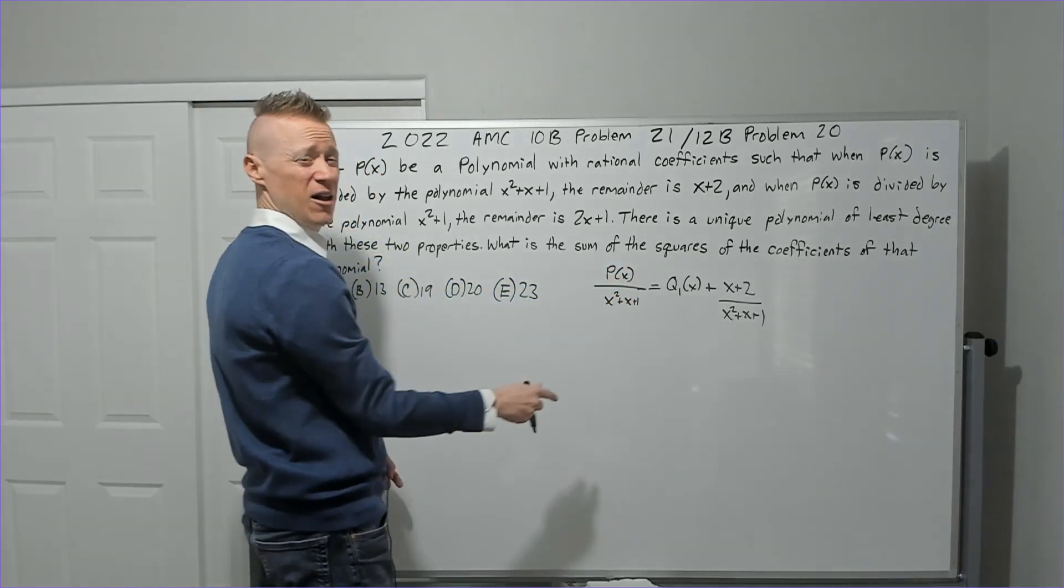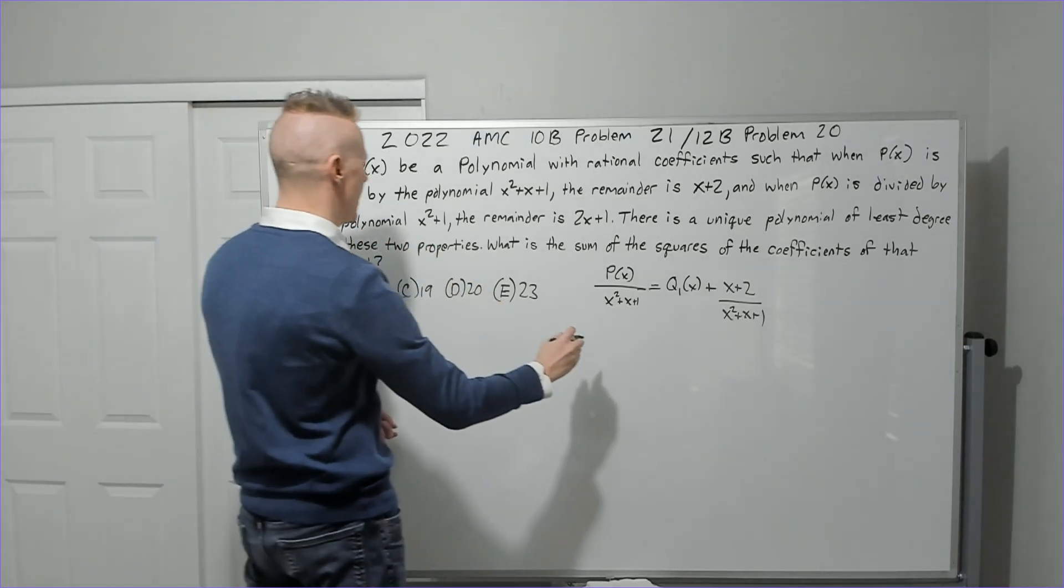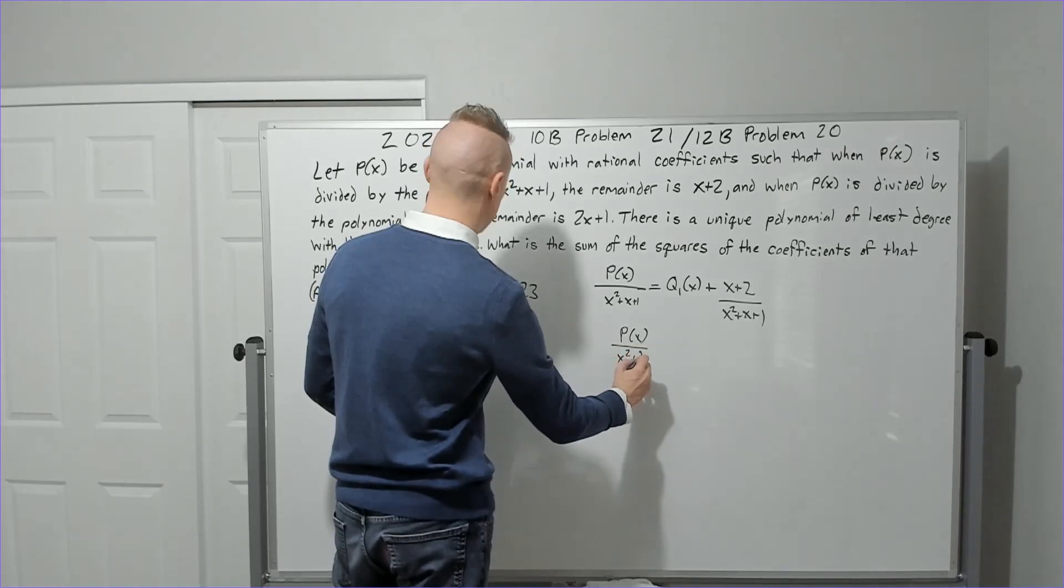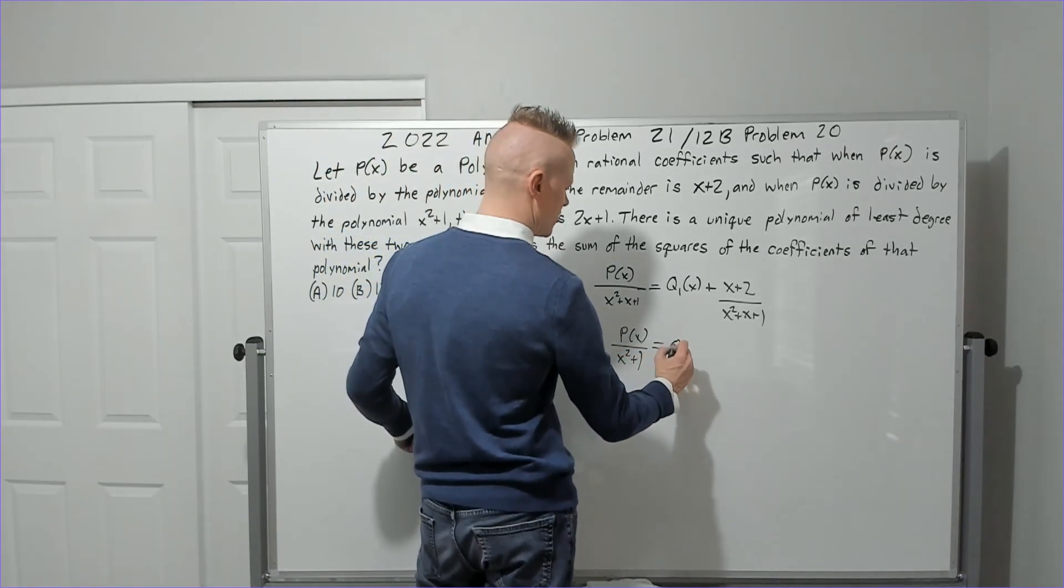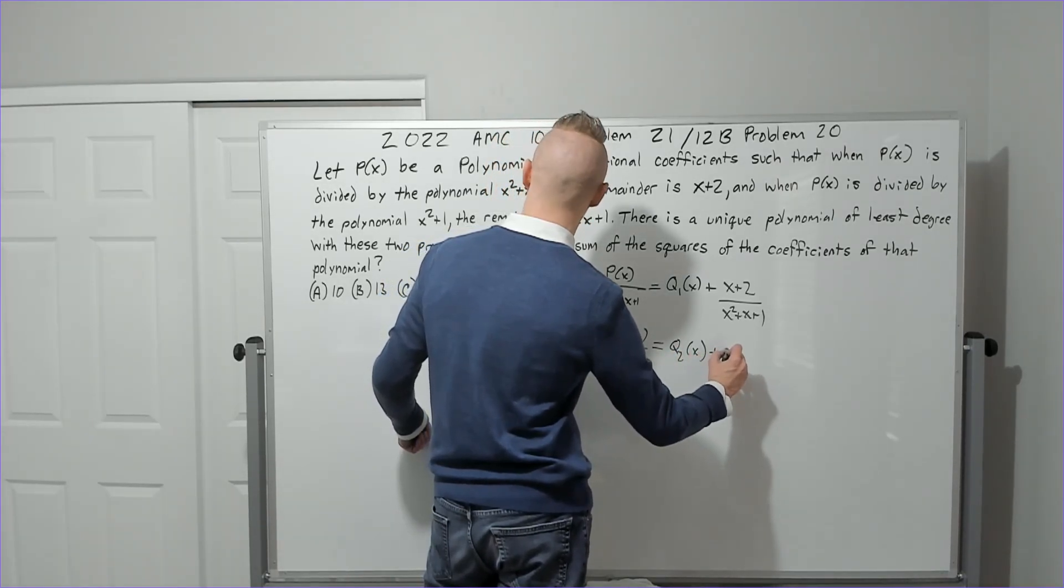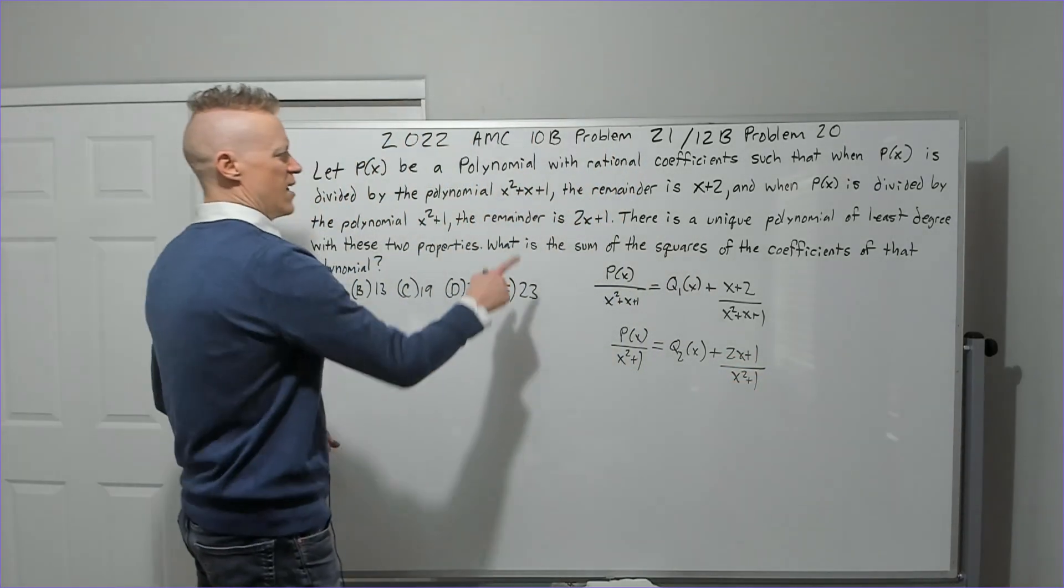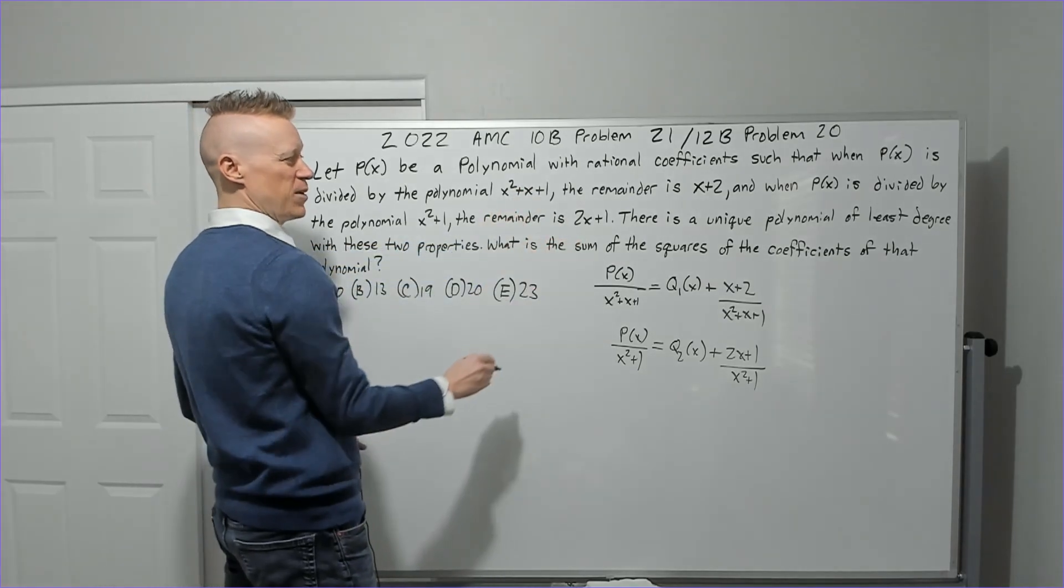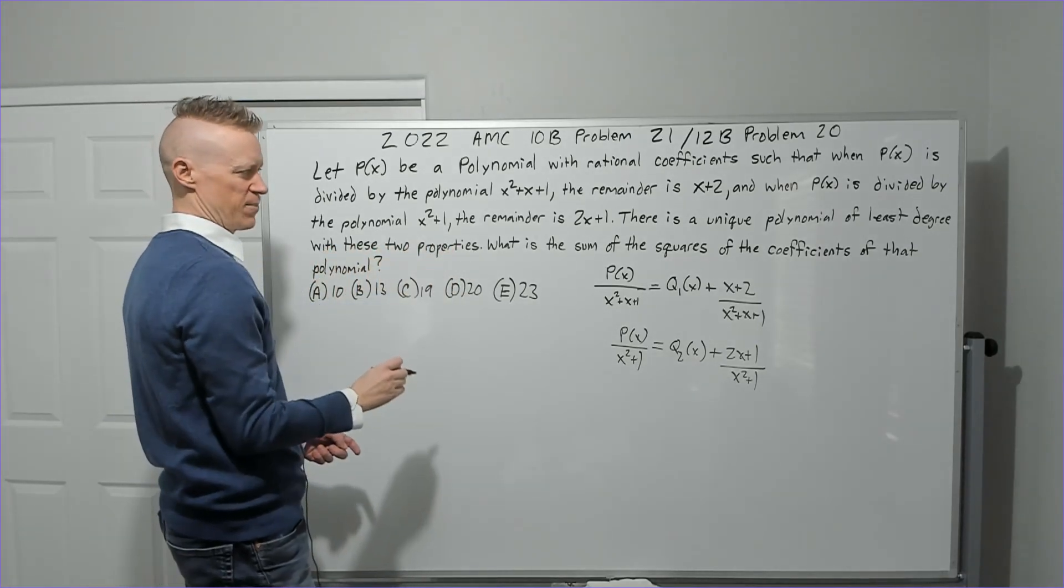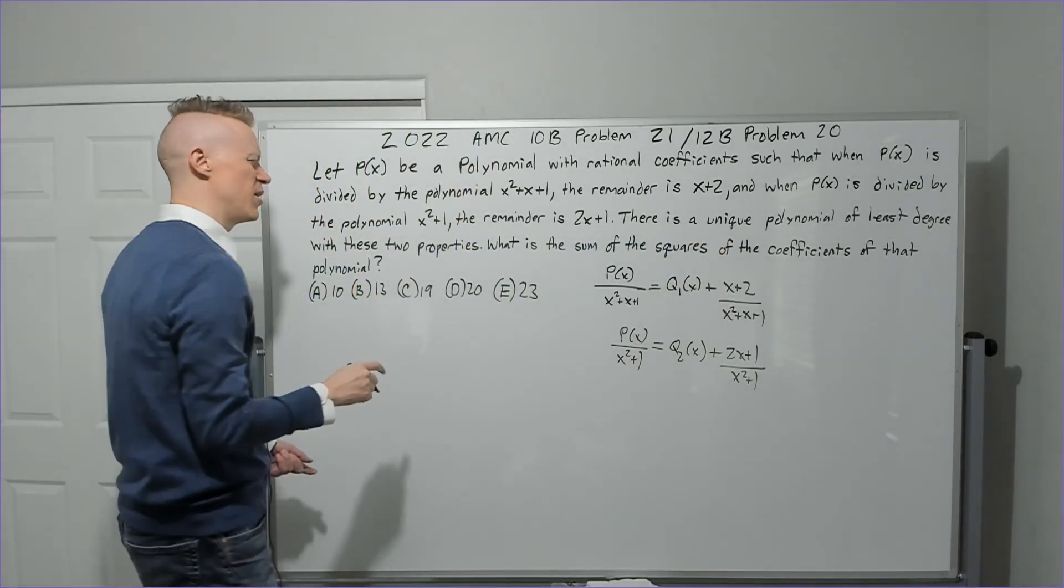This is called the division algorithm. And when p(x) is divided by the polynomial x squared plus one, the remainder is 2x plus one. So we'll probably get a different quotient, 2x plus one over x squared plus one. There is a unique polynomial, only one, of least degree, that's important, with these two properties.